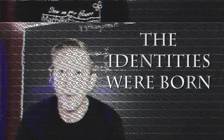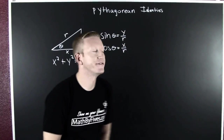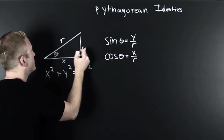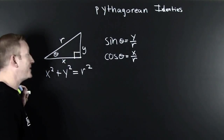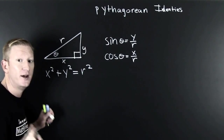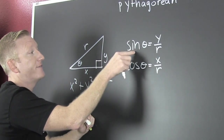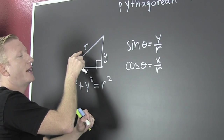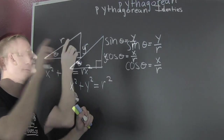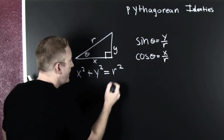This is where the Pythagorean identities were born. We have our right triangle, and the long-established relationship: x² + y² = r². To get the Pythagorean identities, we need the sine of theta — opposite over hypotenuse — and the cosine of theta — adjacent over hypotenuse. What I need to do is divide both sides by r².